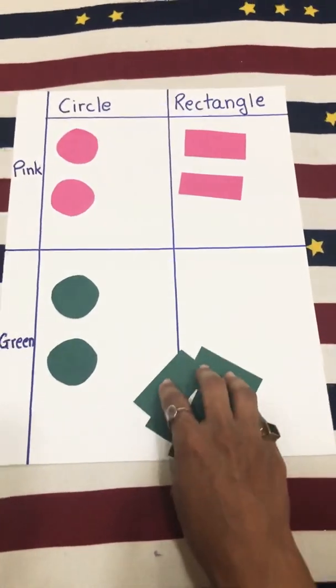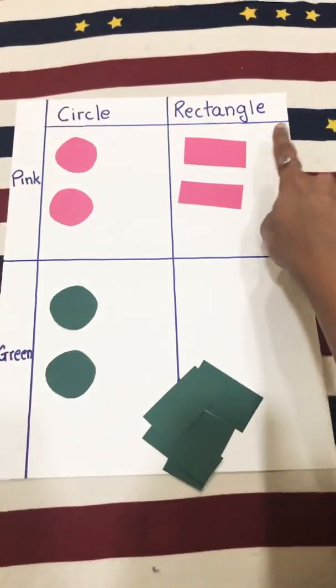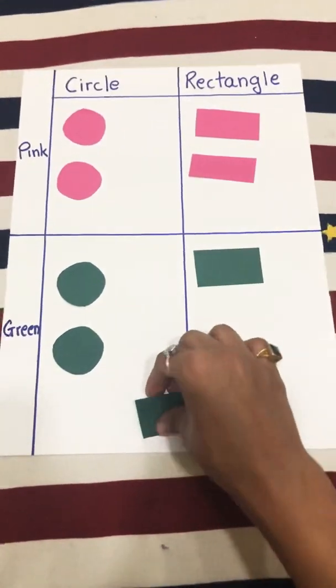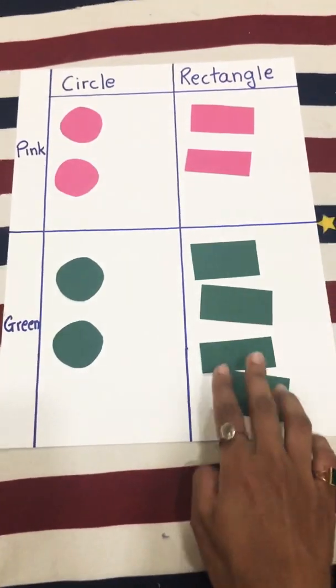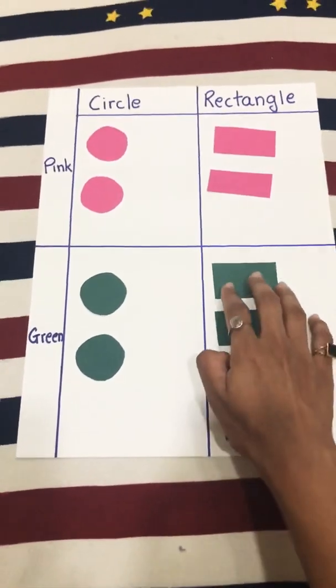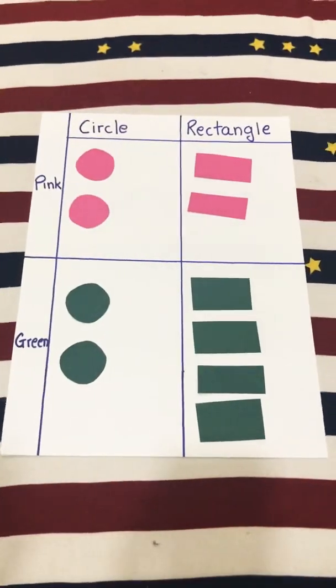And the last column says green rectangle. What I am left with—I have four green rectangles, which I am laying out like this. Our data is sorted using a Carroll diagram.